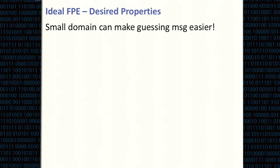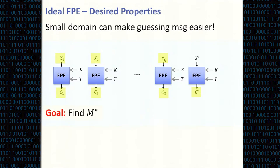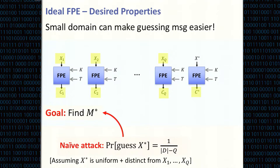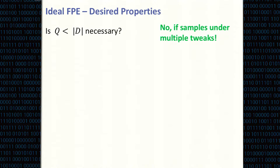The fact that the domain is small already might allow the adversary to guess x* with some probability — roughly one over the domain size minus q, since the adversary knows x* is not one of x1 to xq. This is optimal if x* is uniformly distributed over the remaining messages. This might suggest the best we can hope for in a known-plaintext attack is to learn at most domain-size many messages. But this is not true if we move to the multi-tweak scenario.